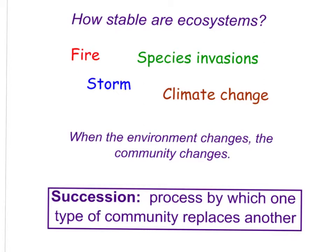That brings us to our next question: how stable are ecosystems? Things like fire, storms, climate changes, and species invasions can all affect stability. When the environment changes, the community changes. When any of these kinds of changes happen, the ecosystem definitely changes. Succession would be a severe change — it is the process by which one type of community replaces another. When change is severe enough, succession occurs and a completely different community ends up emerging.